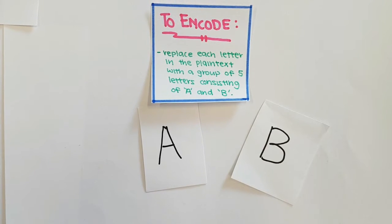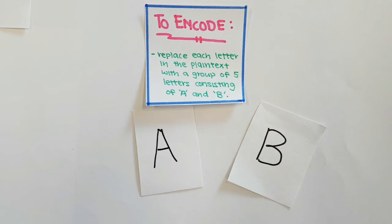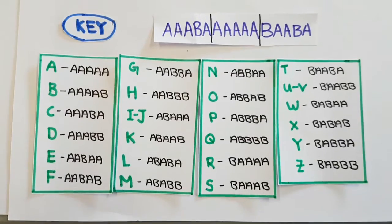Baconian cipher works like any other substitution cipher, which makes it easy to crack but user-friendly. This is the key for encryption and decryption of Baconian cipher. Simply replace the letters in your original message with the groups of five letters.